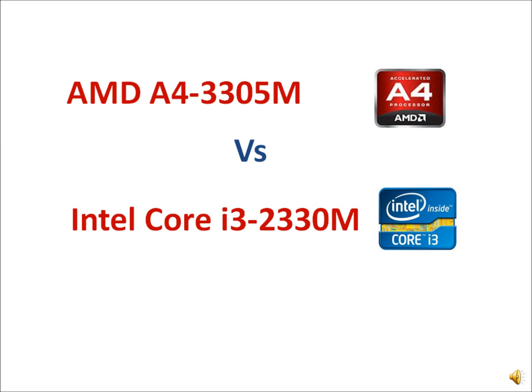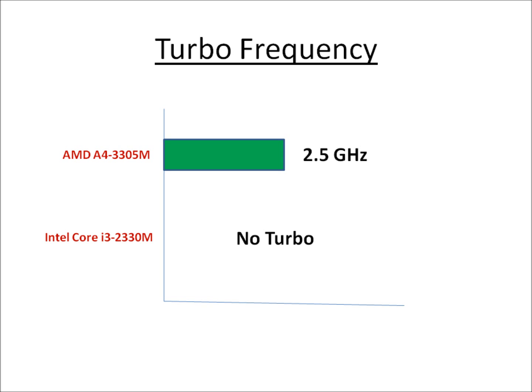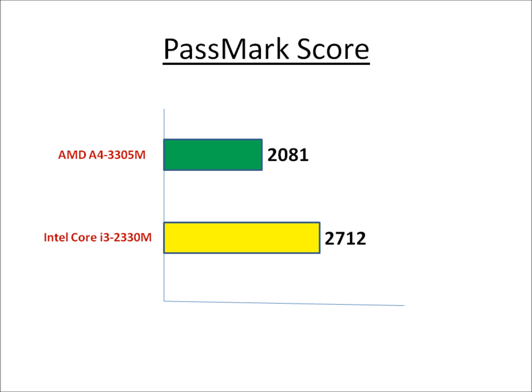Let's take a look at AMD's A4-3305 Lano processor vs Intel Sandy Bridge i3-2330N. In terms of clock frequencies, the i3 is higher than AMD's A4. However, the AMD processor supports a turbo feature which raises its frequency when required.